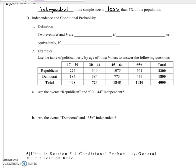Okay, so talking about independence and conditional probability. Two events E and F are independent if the probability of E given F equals the probability of E, or equivalently, if the probability of F given E equals the probability of F.